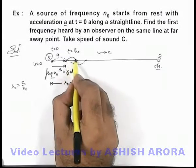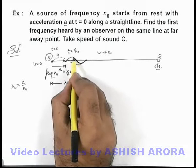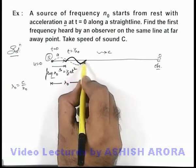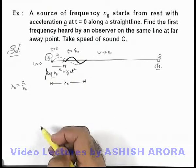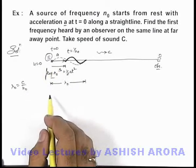So effective wavelength of sound which is emitted from the source will be this, and the same analysis we already studied in the basic theory of Doppler effect when source is in motion.